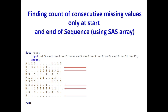Using SAS arrays. To understand this title, let's quickly look into the example below. We have 13 variables but we are interested only in var1 to var12. I have pointed five arrows to indicate that we want to count missing values only when they are at the end — here we have five missing values at the end.